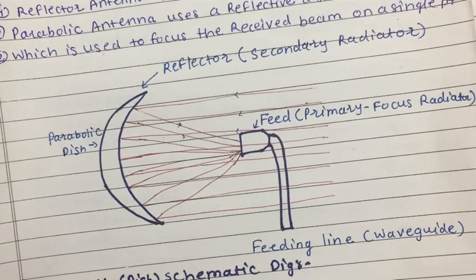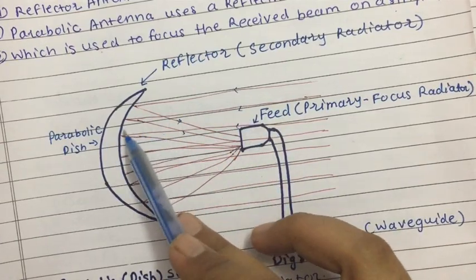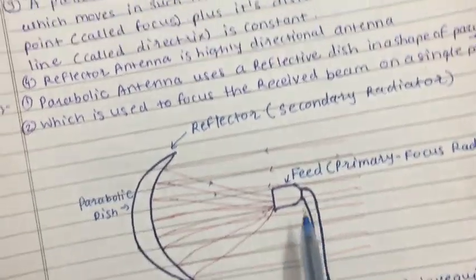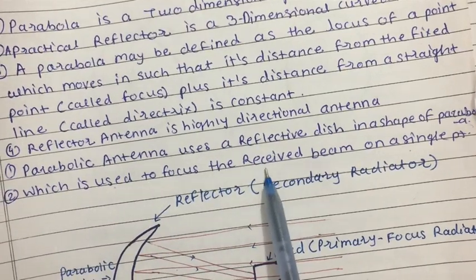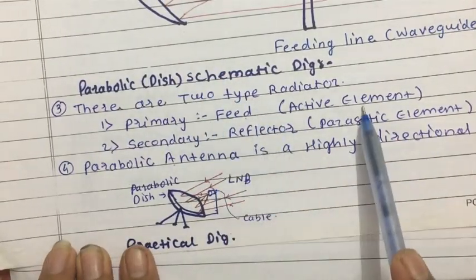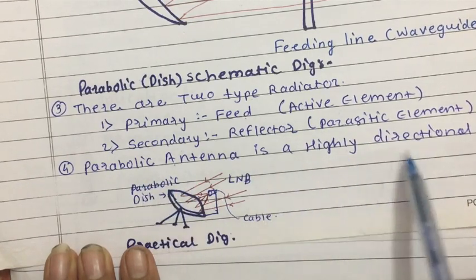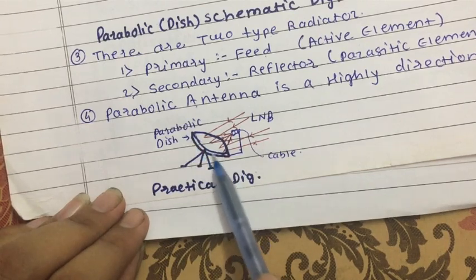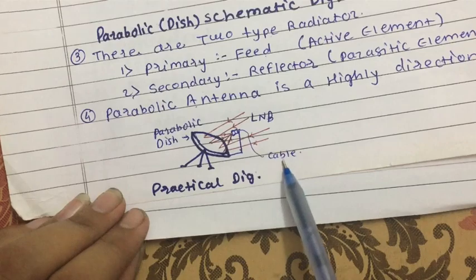The red lines represent radio waves that travel straight to the reflector, bounce off the reflector surface, and are focused on a single point — the feed point — through which the signal is transferred. In practical terms, a dish at home receives radio waves that the parabolic dish focuses onto a single point, and the LNB feeds the signal through a wire. Key point: parabolic antenna uses a reflective dish in the shape of a parabola to focus the received beam on a single point.